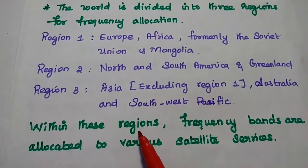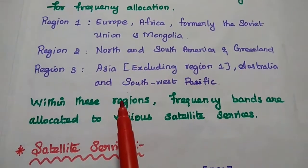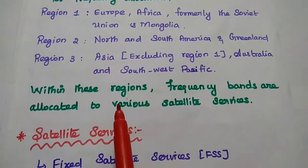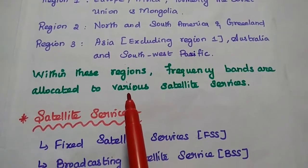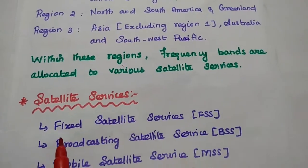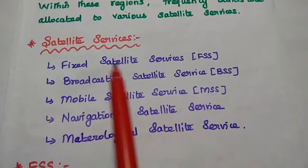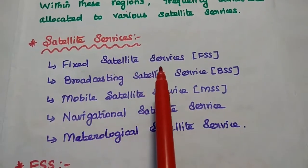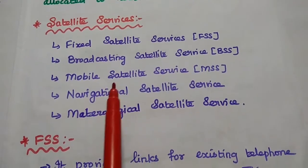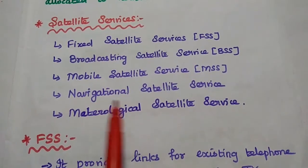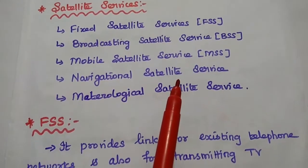So within these regions, the frequency bands are allocated to various satellite services. There are different satellite services available. The major 5 services are: Fixed Satellite Service, Broadcasting Satellite Service, Mobile Satellite Service, Navigational Satellite Service, and Meteorological Satellite Service.